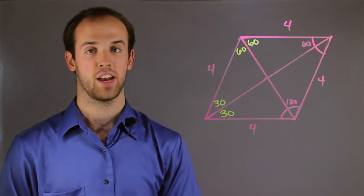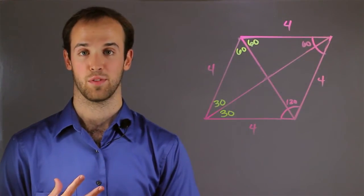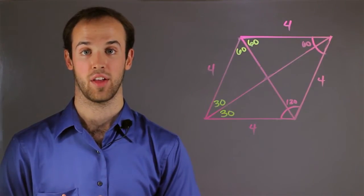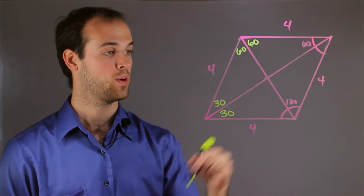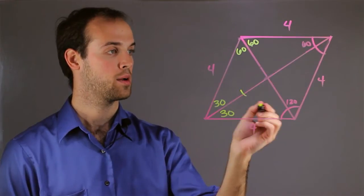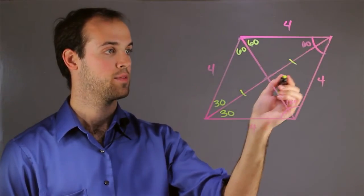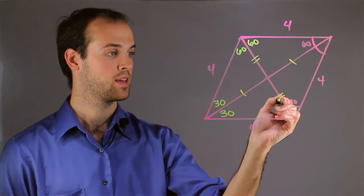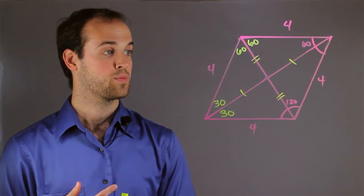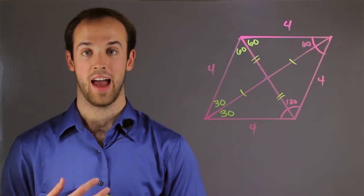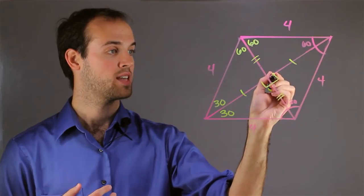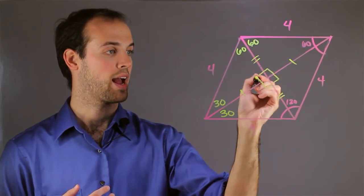The next thing I know about diagonals of a rhombus is that they bisect each other, meaning that they cut each other in half. So I know that this side right here must equal this side over here, and this side over here must equal this side over here. And the final thing I know is that they bisect each other at a 90 degree angle, which means that all of these angles inside are right angles.